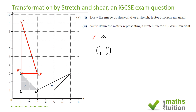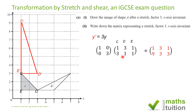The transformation matrix for this stretch is [[1, 0], [0, 3]]. To verify, we apply this matrix to the coordinates of C, D, and E. The X values stay the same. Multiplying gives C' = (1, 9), D' = (3, 3), and E' = (1, 3) — the Y values are each increased by a factor of 3.